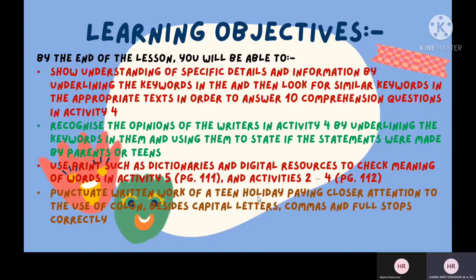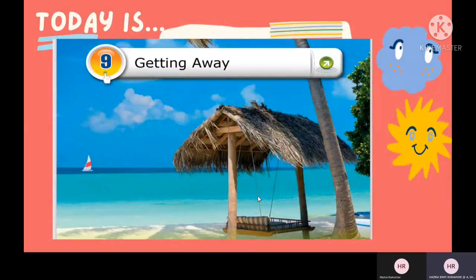This is the front page of Unit 9, 'Getting Away.' From the picture, we can see a swing under a palm tree on a beautiful beach on a tropical island. The title connects to the picture because it is somewhere people go to get away and relax themselves.